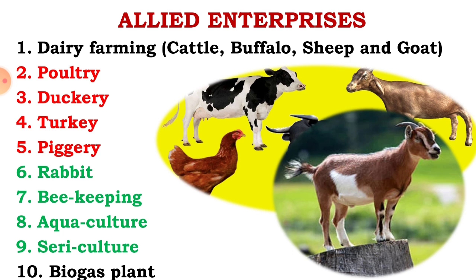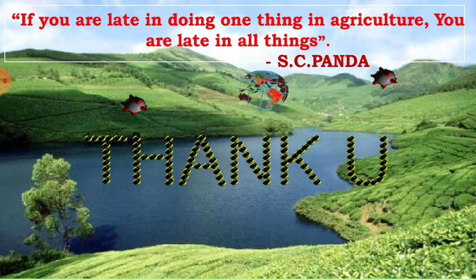These are the allied enterprises — efficient cropping system and allied enterprises. For the components of farming system and their maintenance, refer to lecture number 4. This is lecture number 7: Efficient Cropping System and Allied Enterprises. Thank you.